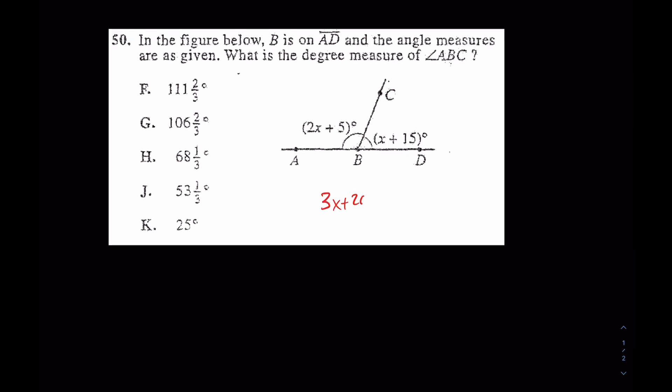3X plus 20 equals 180. And again, why? If this and this give you a straight line, they're supplementary angles. Supplementary meaning they add up to 180. In that case, let's subtract 20 from both sides. You have 3X equals 160. And then divide both sides by 3. You get X equals 53.3 repeating. And that's cool.